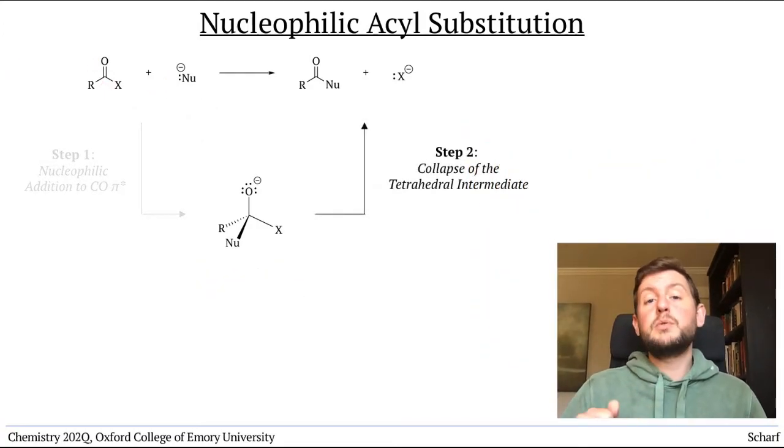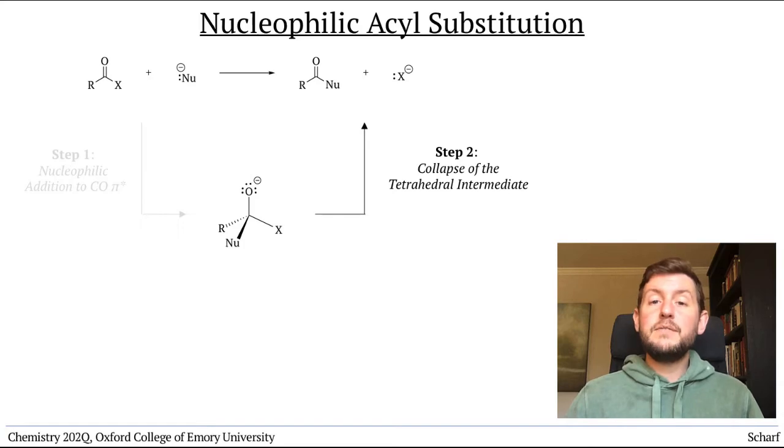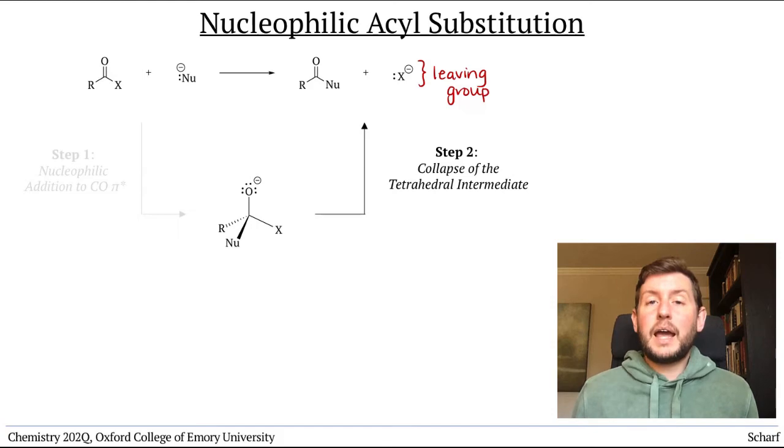The second step, which we'll focus on in this video, involves the collapse of that tetrahedral intermediate and the elimination of a leaving group. Here it's the generic X-.